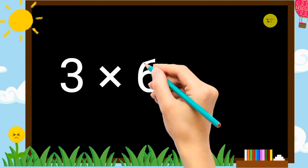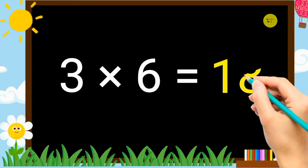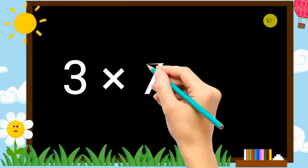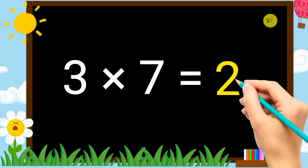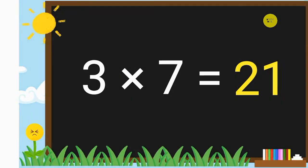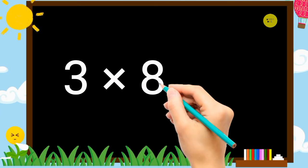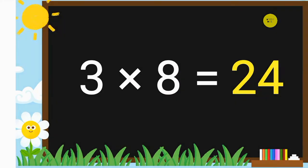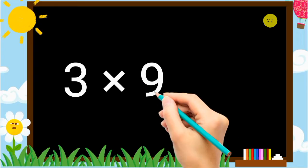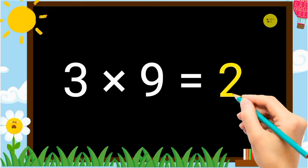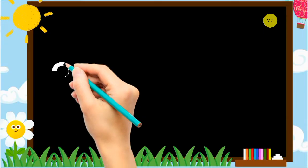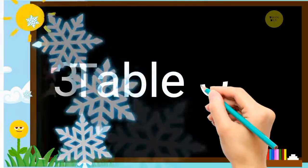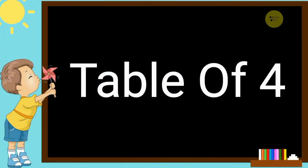3 6's a 18. 3 7's a 21. 3 8's a 24. 3 9's a 27. 3 10's a 30. Table of 4.